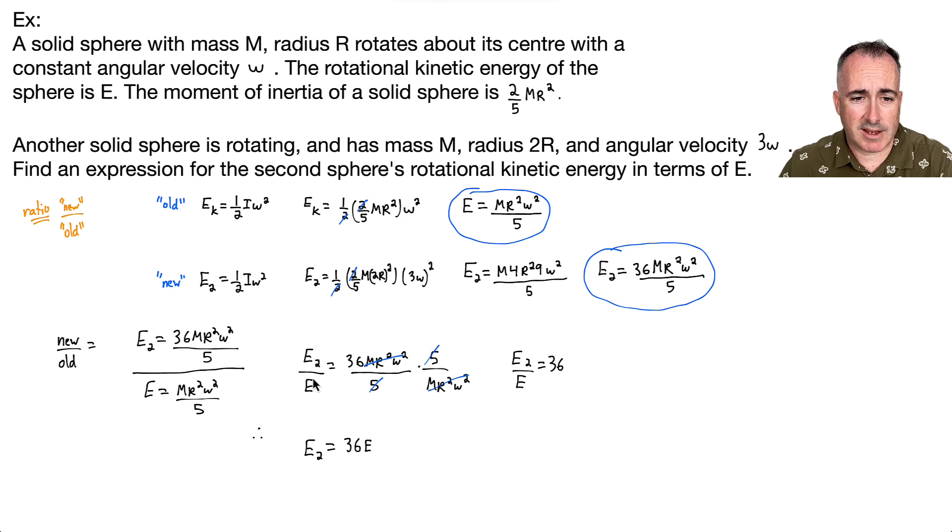Like I said, those who are fast with this or have done this before will skip this last step, which is fine. You basically just want to get your second one in terms of your first one. If you notice, M R squared omega squared over 5 - this one also had M R squared omega squared over 5. Therefore, if you divided this by this, it's just going to be 36. This is a very typical setup question for paper 1A, multiple choice. You're supposed to do this fairly fast.